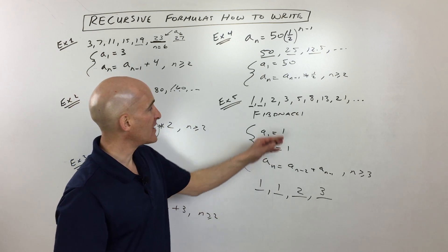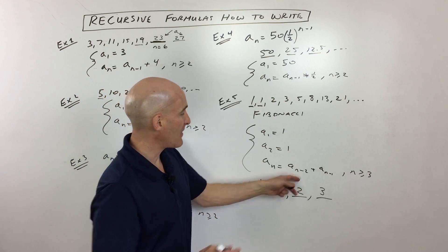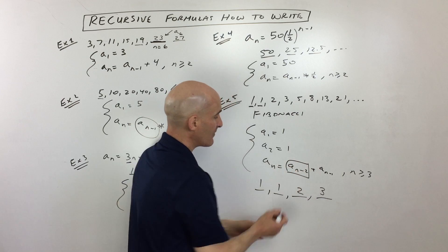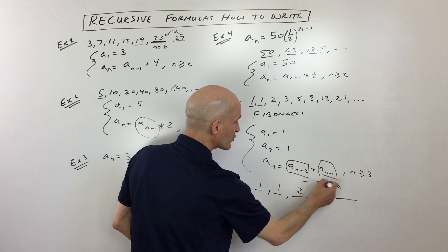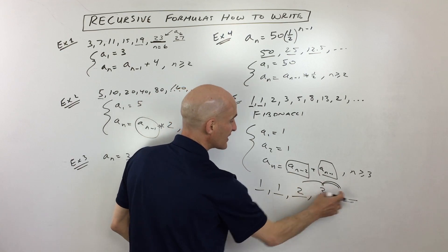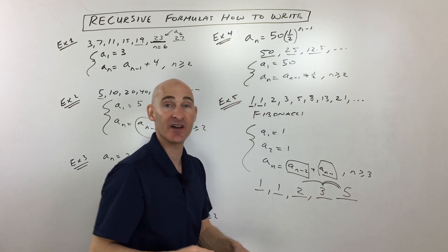And it continues like that. But after you do this a while, you'll kind of just look at the a sub n minus 2 and just say to yourself, that just means that I go two terms back. And a sub n minus 1 just means that I go just one term back and I add those together. And that's how I'm getting the next term in the sequence.